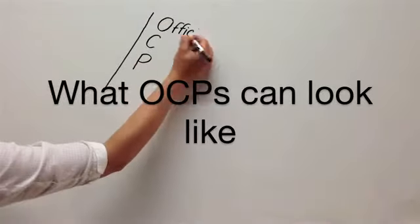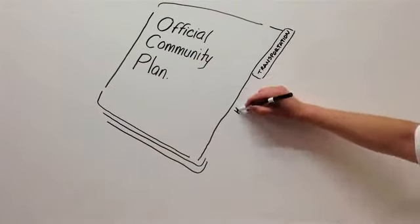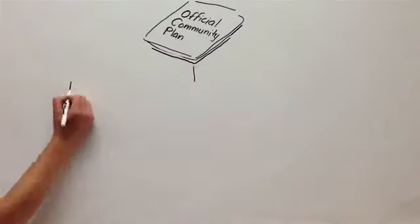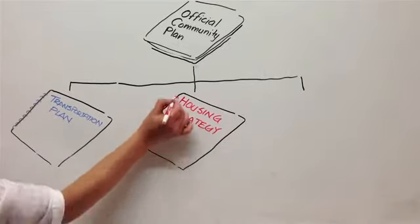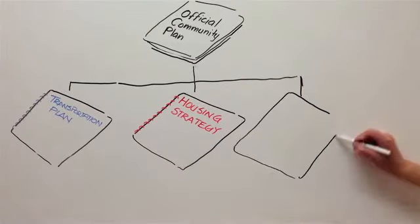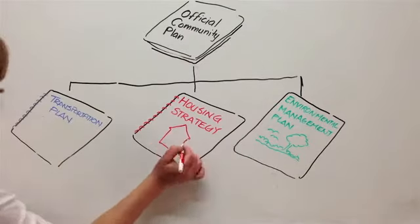In some communities, an OCP may have more information and play a more central role in governments with policies, regulations, and guidelines. In others, an OCP may be a more overarching vision and policy document that is accompanied by a wide range of policy plans and regulatory documents that cover each issue in more detail.